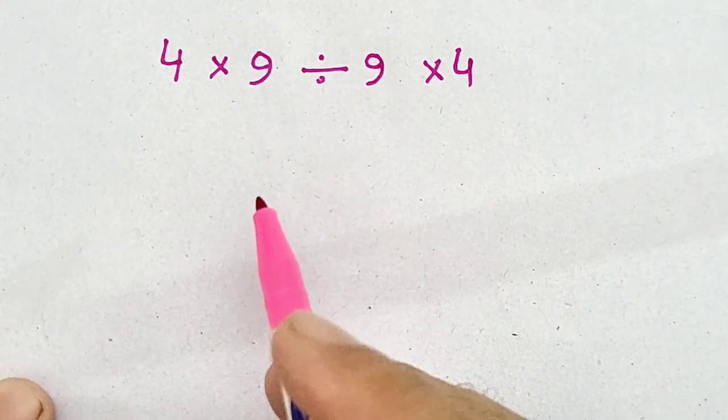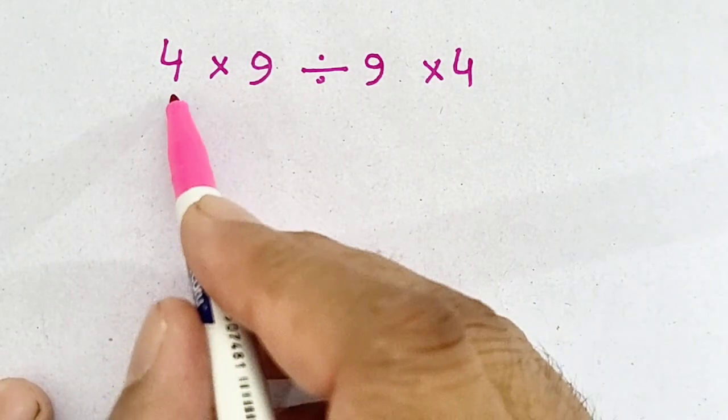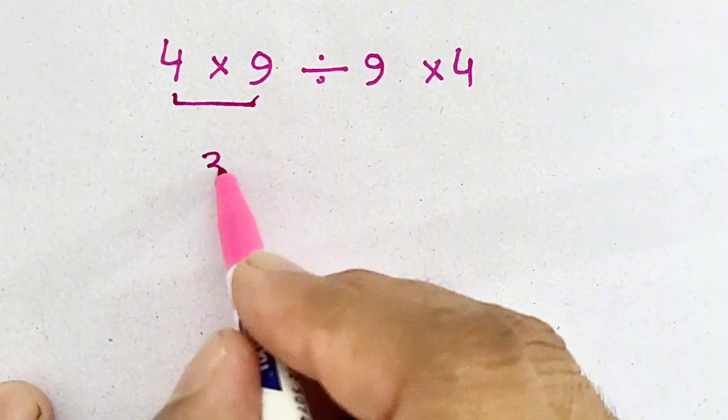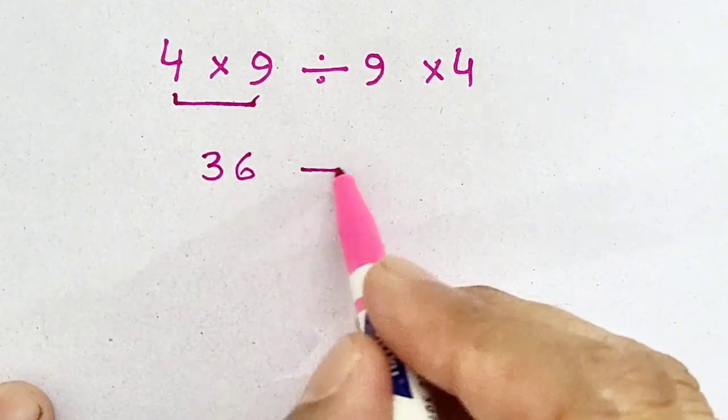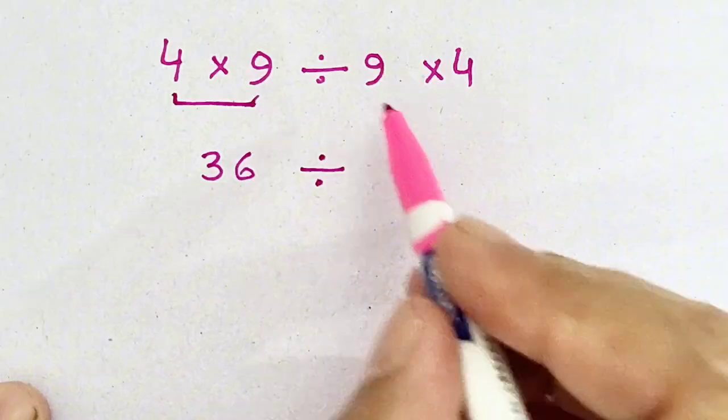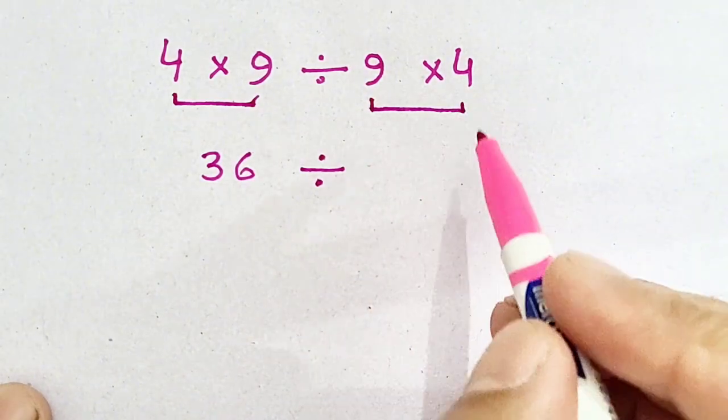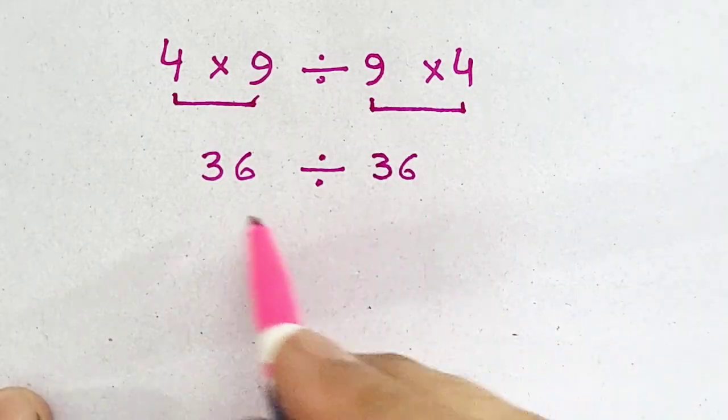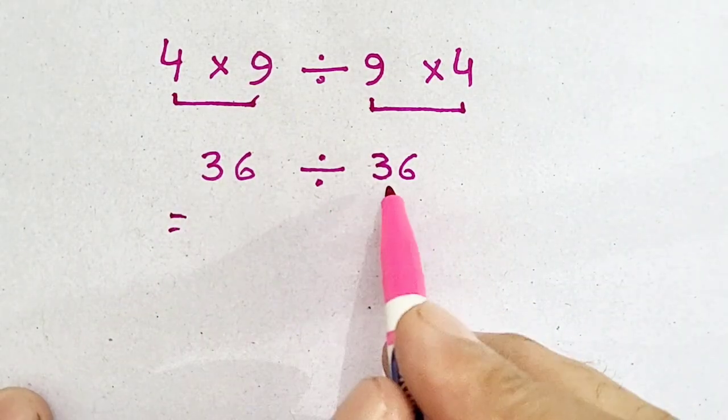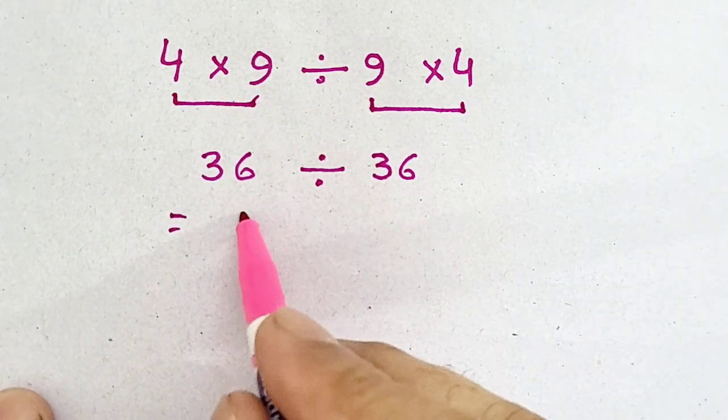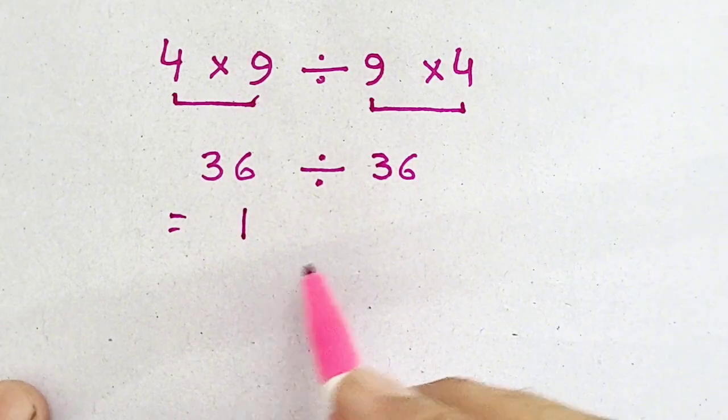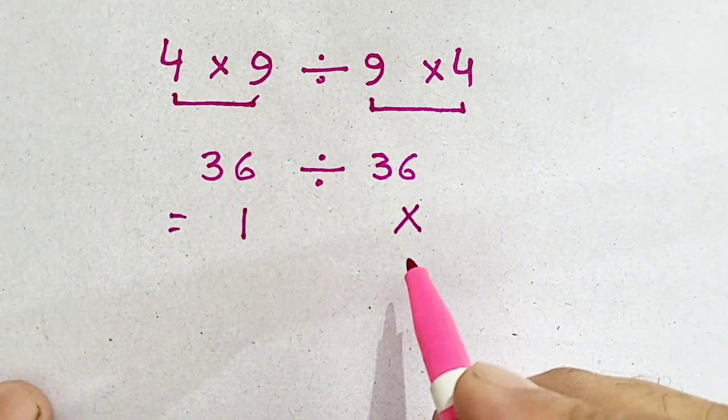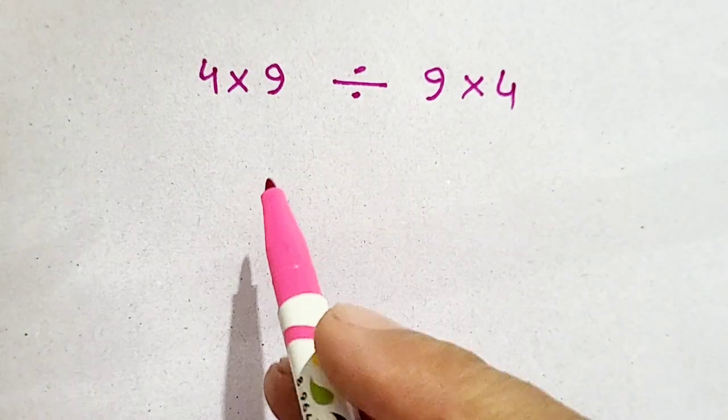Hello, welcome to my YouTube channel. 4 times 9 is equal to 36 divided by 9 times 4. It is also equal to 36, so 36 divided by 36 is equal to 1. But this question is now wrong.